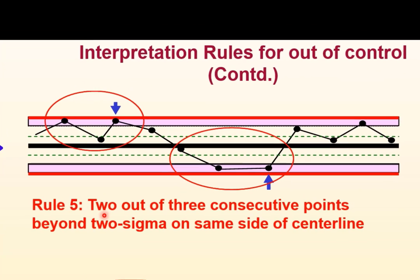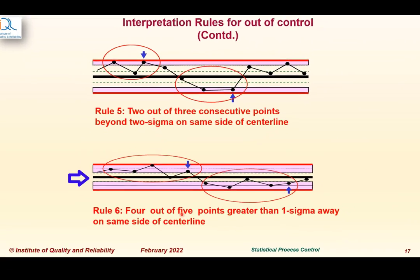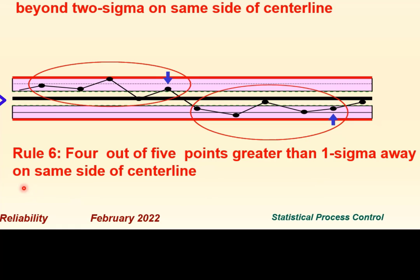Rule 5: two out of three consecutive points beyond the two-sigma zone on the same side of the center line. The two-sigma zone is shown in pink — in the first example, two of the three points are in that pink zone; the second example shows the same on the lower side. Rule 6: four out of five points greater than one sigma zone away on the same side of the center line. The one-sigma zone is shown in white and the remaining zone in pink — four out of five points are beyond one sigma.